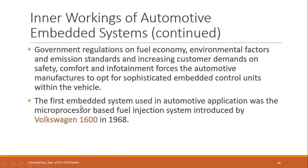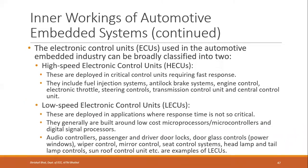The first embedded system used in an automotive application was in 1968 — a microprocessor-based fuel injection system. The vehicle was the Volkswagen 1600. Electronic control units fall under two categories based on speed: high-speed electronic control units and low-speed electronic control units.